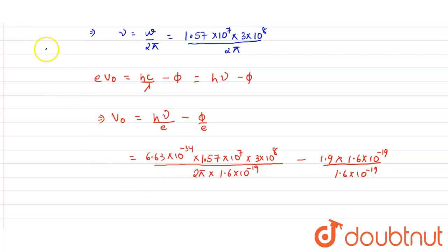So on solving this, we will get our stopping potential V0 and stopping potential V0 will come out as 1.206 volt. So this is our stopping potential. Thank you.